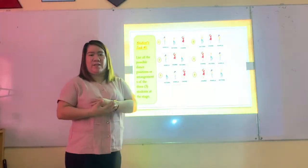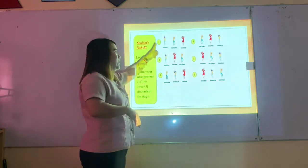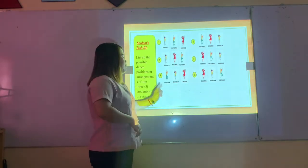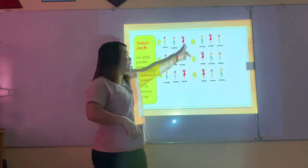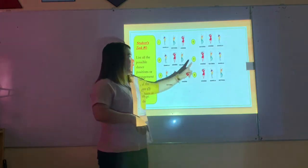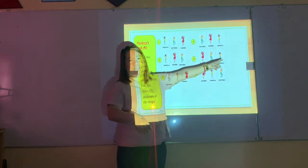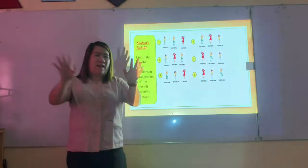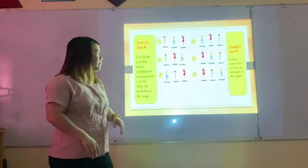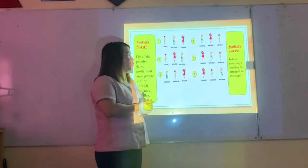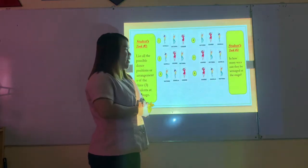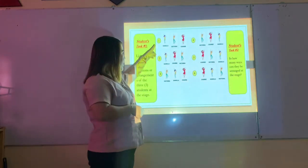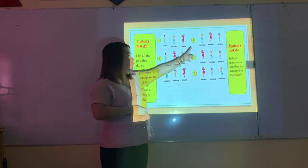Here are all the arrangements for the three students: Daniela-Victoria-Charlie, Daniela-Charlie-Victoria, Victoria-Daniela-Charlie, Victoria-Charlie-Daniela, Charlie-Victoria-Daniela, and Charlie-Daniela-Victoria. Counting them: one, two, three, four, five, six.